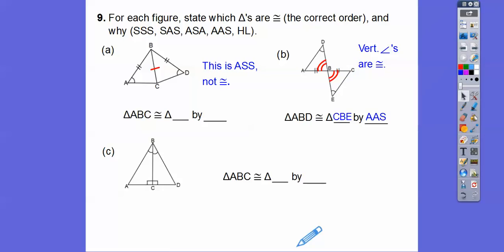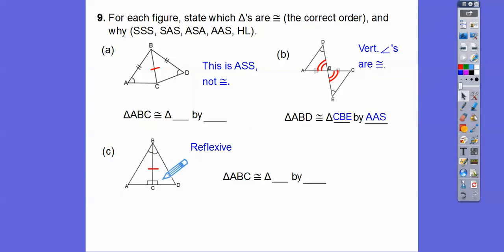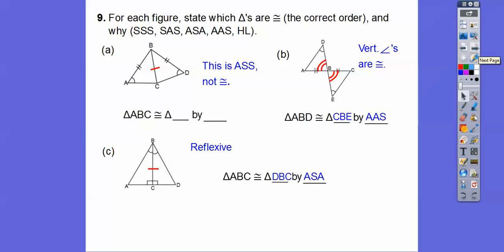For this next one, I'll use the reflexive property. Some kids said this one's HL, but it's not HL because the hypotenuse is this side and this side — it's not being included. Even though these are right triangles, this one is angle-side-angle because the side is included between these two angles. Just make sure you get your letters in the correct order.